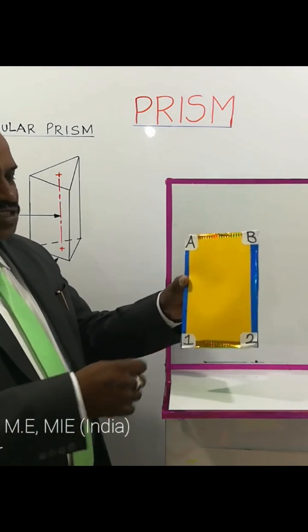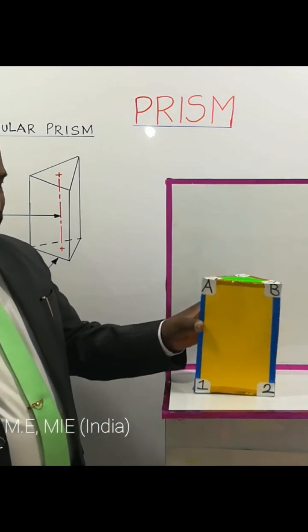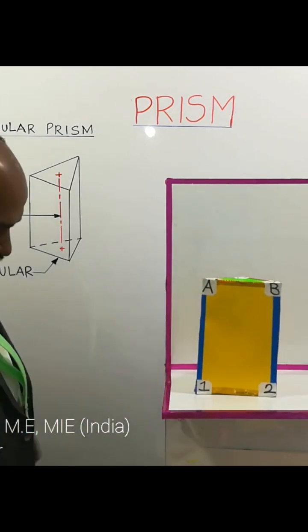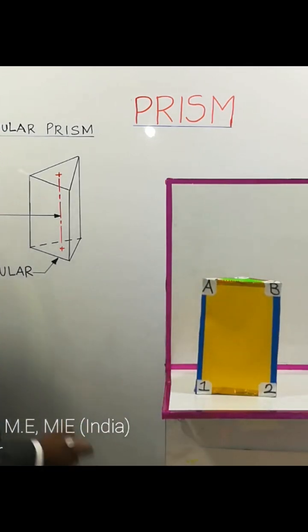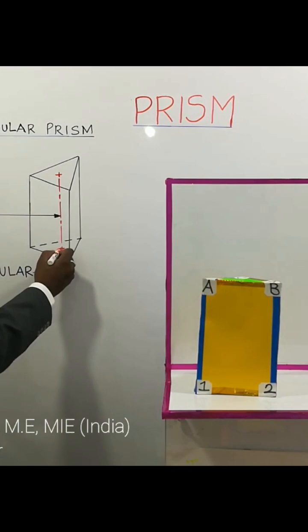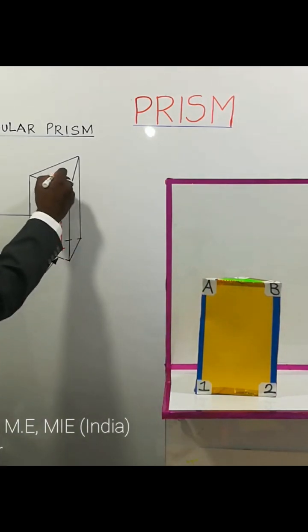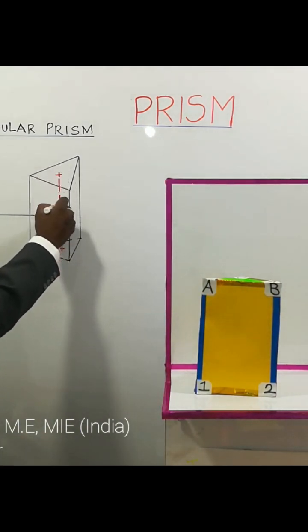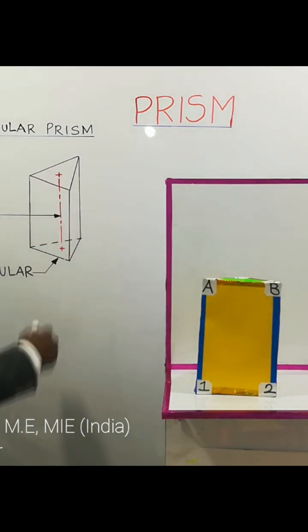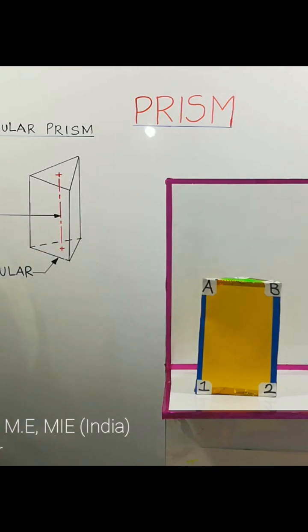The line joining the center of the base and the center of the top surface is called the axis of the prism — the axis of the triangular prism.